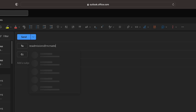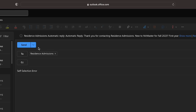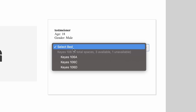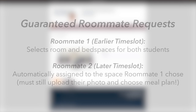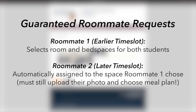Once you've found a room you like, click on it and then select the bed space you'd like to live in. You can also select the bed space of any roommates you have. If you've been guaranteed a roommate request, the student with the earlier time slot will select the room for both roommates. The student with the later time slot will only have to upload their photo and choose their meal plan during their designated time, as they've already been placed into whichever room their first roommate selected.